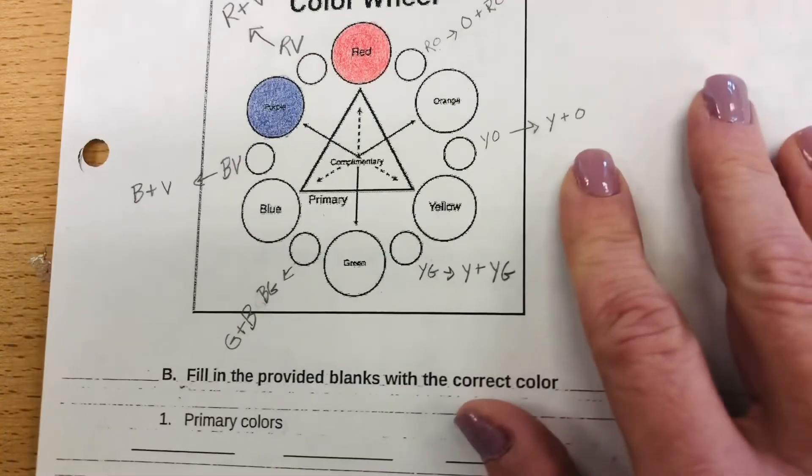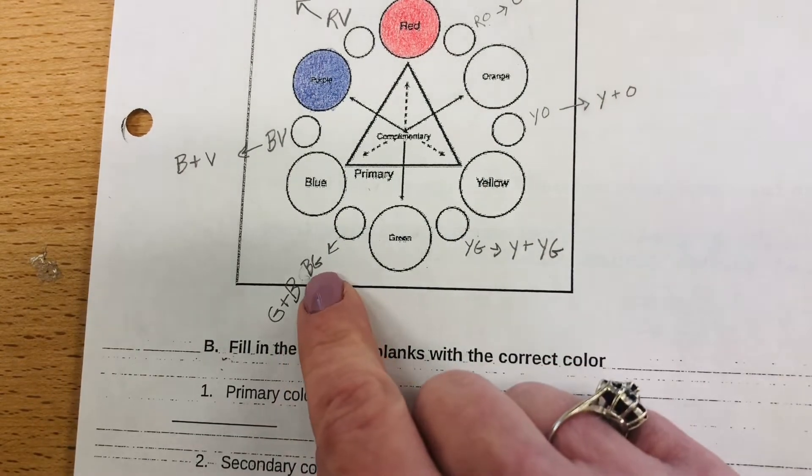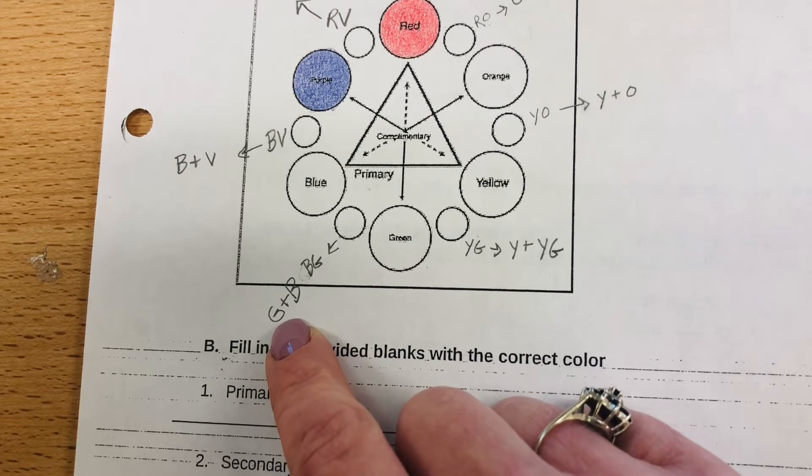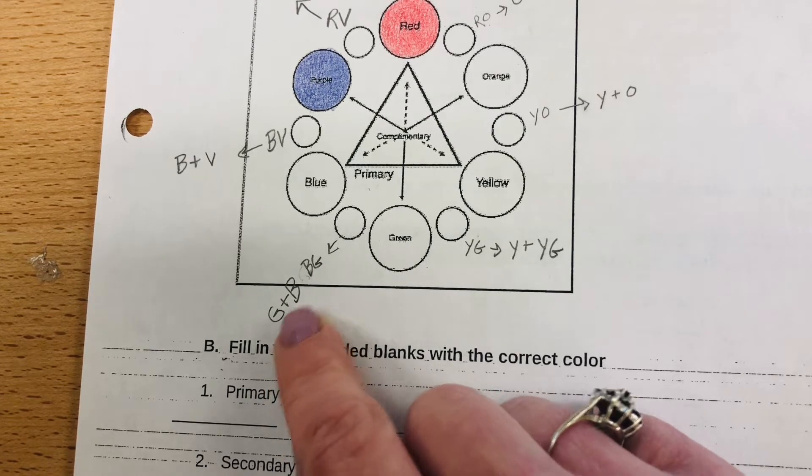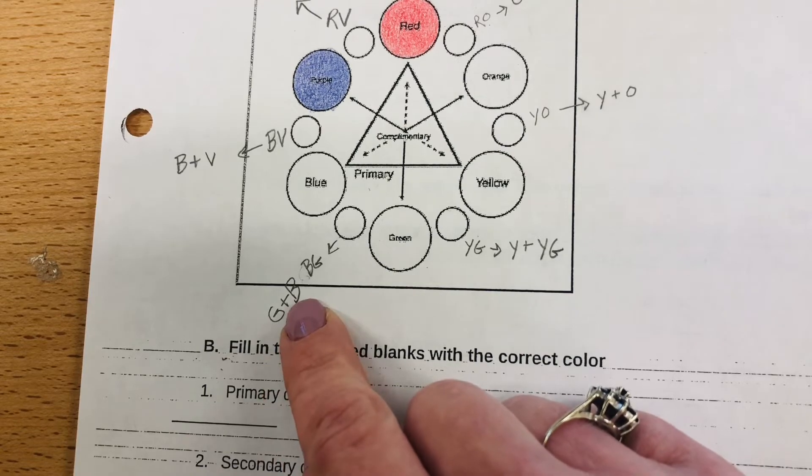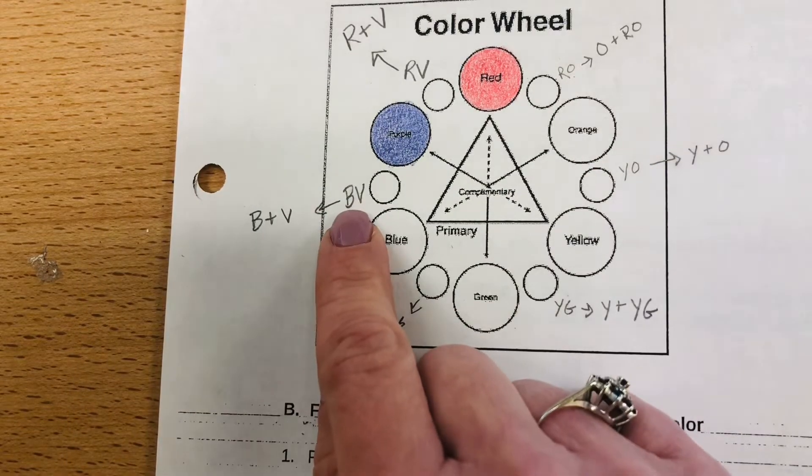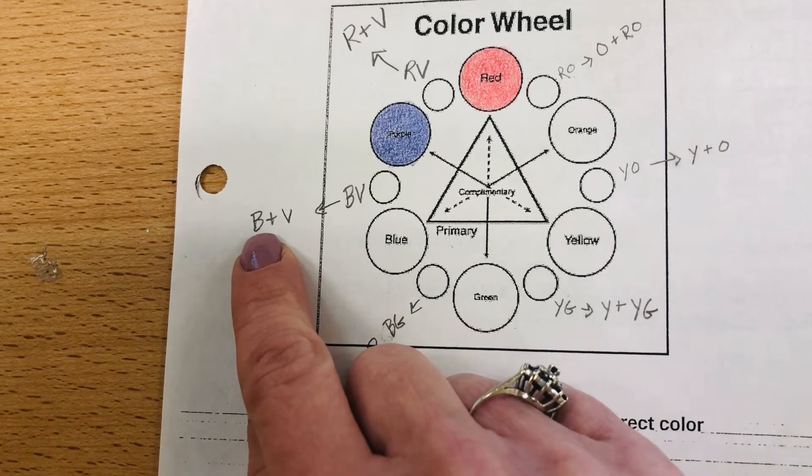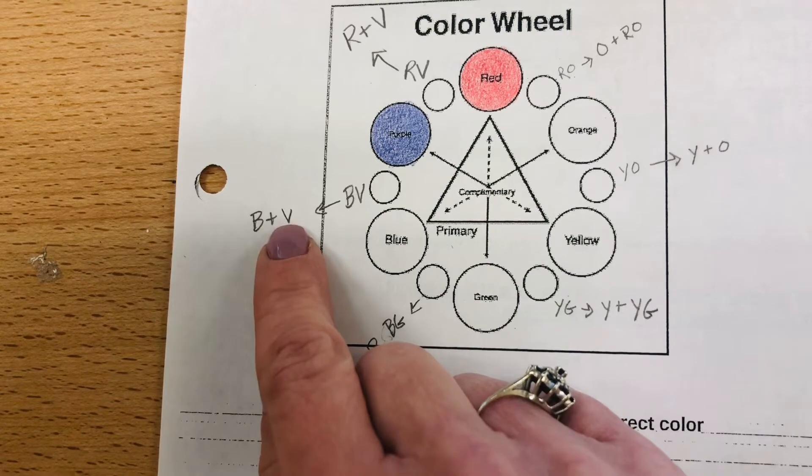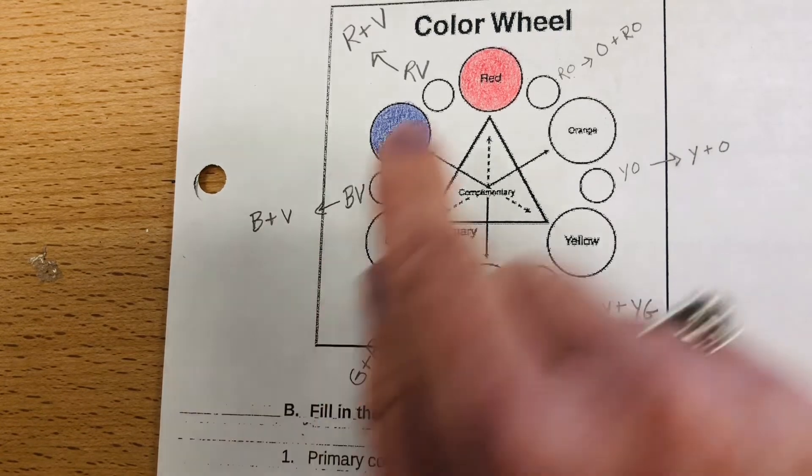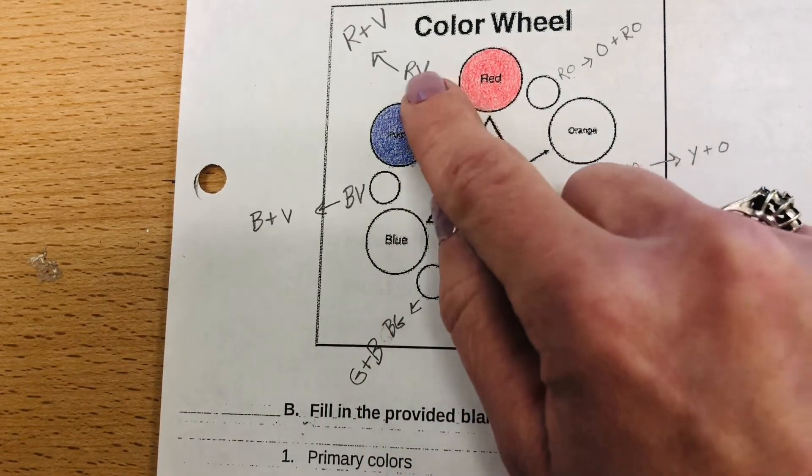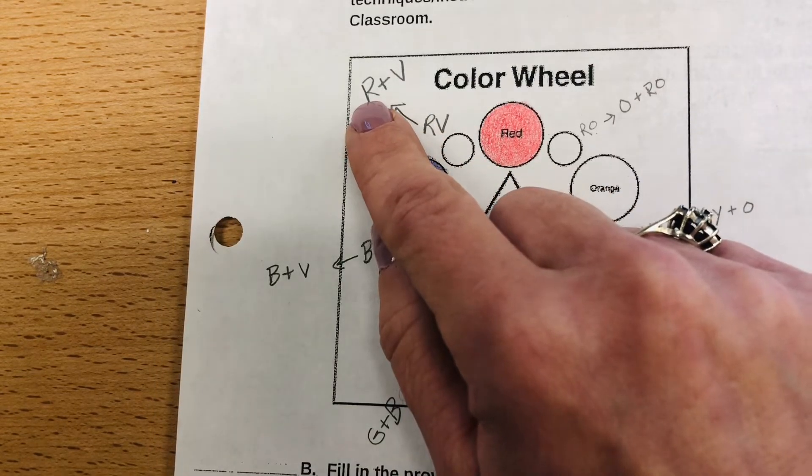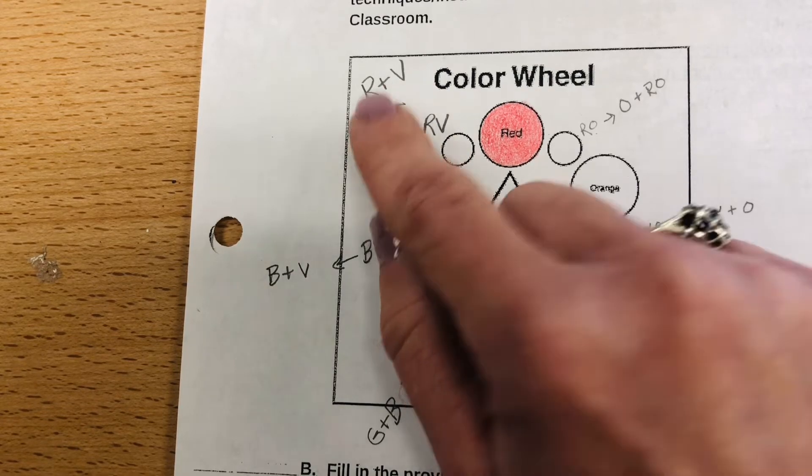The next one we have is blue-green. You'll end up putting green first and then blue second because green is lighter than blue. The blue-violet, you'll end up putting blue first because it's lighter than violet, and then violet second. The red-violet, right here RV, you'll put the red first and then the violet. Red is lighter than violet.